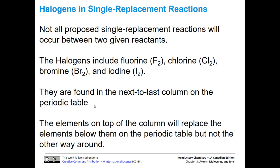The halogens are in group 17, right by the noble gases. They include fluorine, chlorine, bromine, and iodine — remember, they all exist as diatomics. They're found in the next-to-last column on the periodic table. The elements on the top of the column will replace the elements below them, but it doesn't work the other way around. So we're going to be able to predict whether a certain reaction will go based on the placement of that halogen on the periodic table.